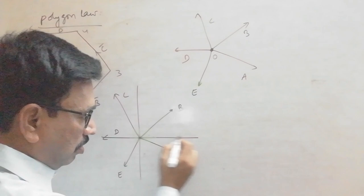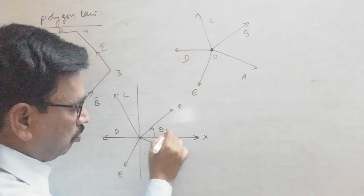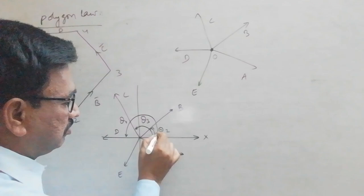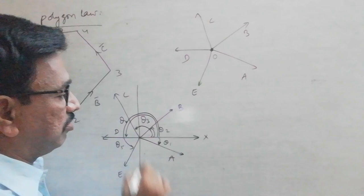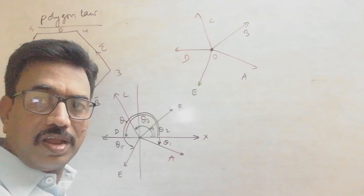Now, all the angles are measured from the positive X-axis. So this is theta1, which is in the clockwise sense so it is negative, and this is theta2, and this is theta3, and this is theta4, which is 180 degrees, and this is theta5. All the angles are measured from the positive X-axis for all these vectors.